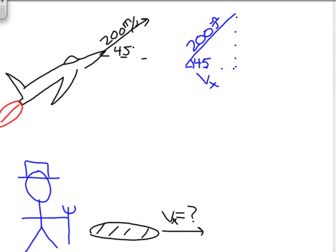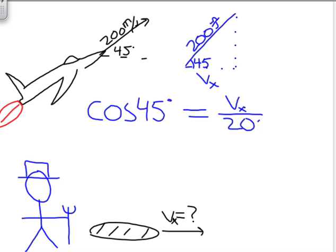We can use the fact that cosine of an angle, in this case 45 degrees, equals the adjacent side divided by the hypotenuse, which is 200 meters per second.